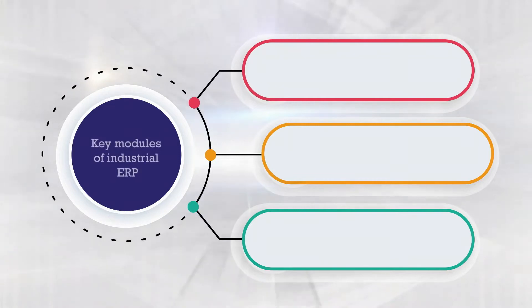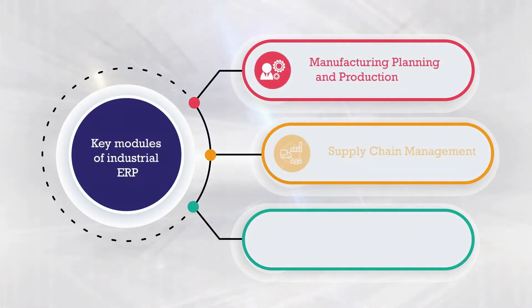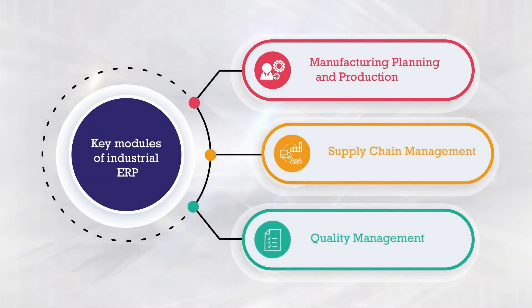The three main functionality modules are manufacturing, planning and production; supply chain management; and quality management. Let's take a look at each functionality set in closer detail.